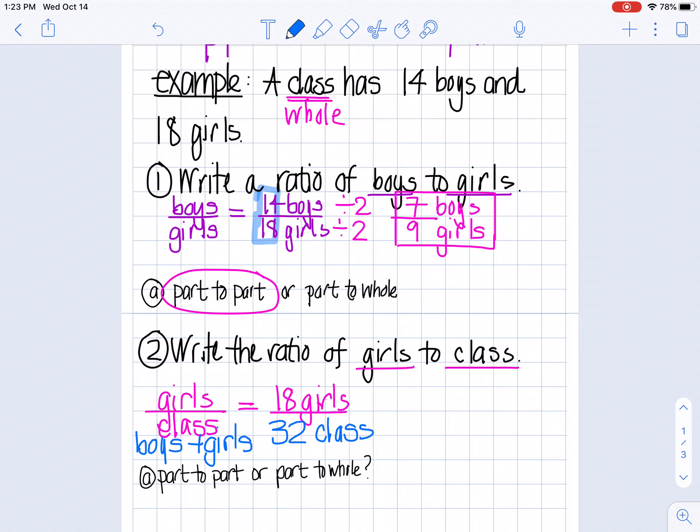Now the next thing I have to do is make sure that my ratio is in simplest form. So I have to ask myself, is there a number that goes into 18 and 32? Let's try two. So I'm going to divide the top by two and the bottom by two. So 18 divided by two is nine. So that's good. Oops, not boys. Sorry. Nine girls. And what is 32 divided by two? 16. 16 for my class.